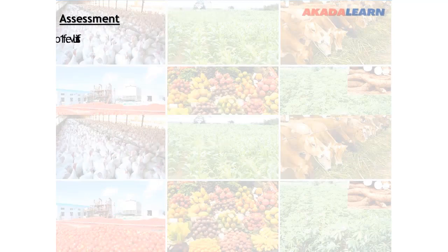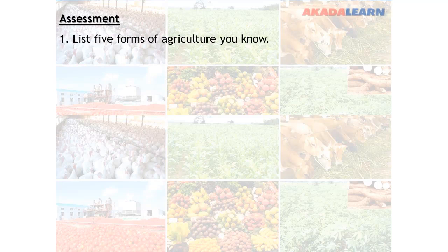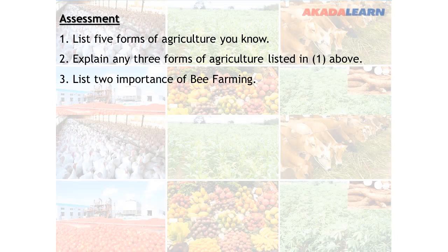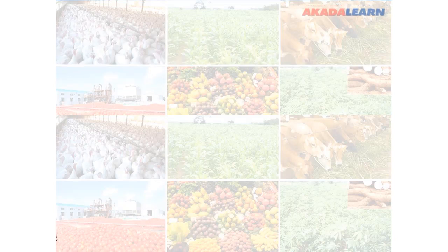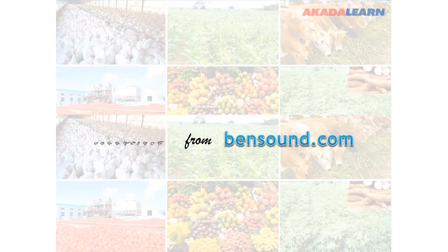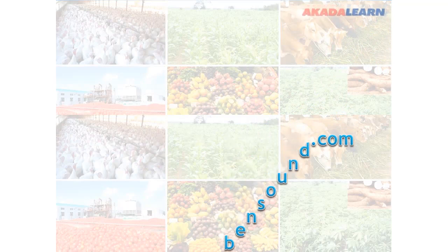Assessment: List five forms of agriculture you know. Explain any three forms of agriculture listed above. List two importances of bee farming.